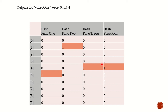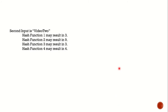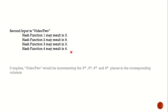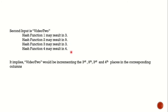As we said, hash function 1 for video 1 gives us 5, so we increment the fifth index. Hash function 2 gives us 1, so we increment the first index. Hash function 3 gives us 4, so we increment the fourth index. Hash function 4 also gives us 4, so we increment the fourth index again. We simply repeat this process for every watched video. For video 2, the outputs of the hash functions are 3, 9, 3, and 4, so we need to increment the corresponding indexes.